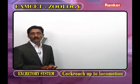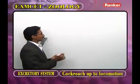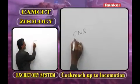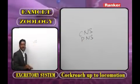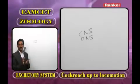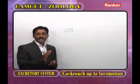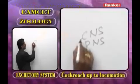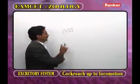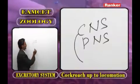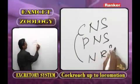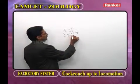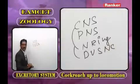As we observe the body of Pheretima, the nervous system is classified into the central nervous system and the peripheral nervous system. In the central nervous system, the components are: one, the nerve ring, and the second one is the double ventral solid nerve cord.